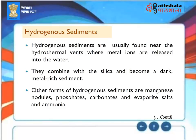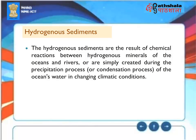Hydrogenous Sediments: Hydrogenous sediments are usually found near hydrothermal vents, where metal ions released into the water combine with silica to become a dark, metal-rich sediment. Other forms include manganese nodules, phosphates, carbonates, and evaporite salts. Hydrogenous sediments result from chemical reactions between hydrogenous minerals of the oceans and rivers, or are created during precipitation or condensation of ocean water in changing climatic conditions.